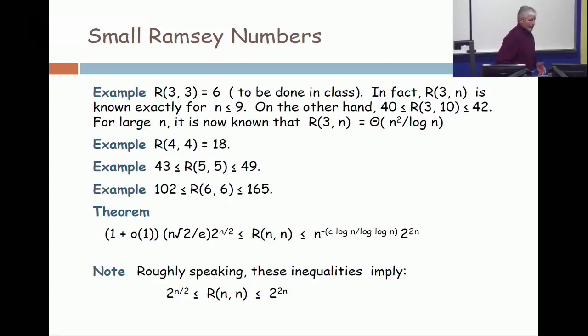And moreover, Erdős realized that once you've put it in the probability setting, you don't have to use a fair coin. You can bias it to your taste, your application, and make the P much smaller than one half. In fact, you can make it a function of N.